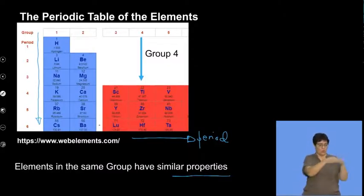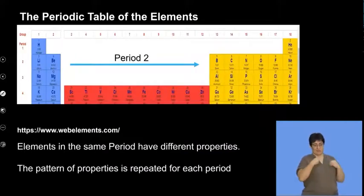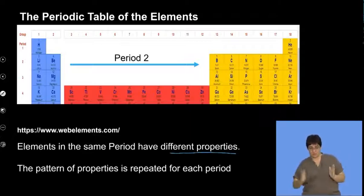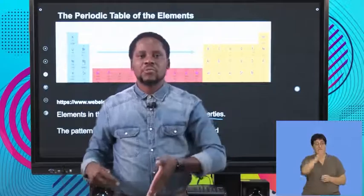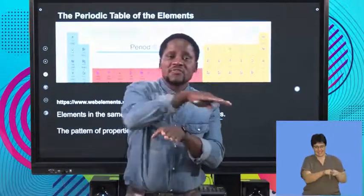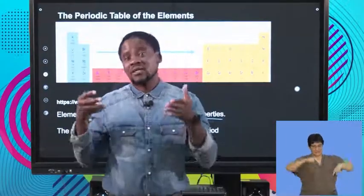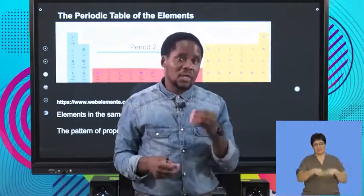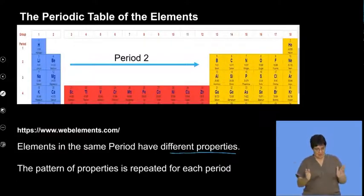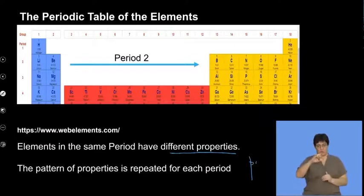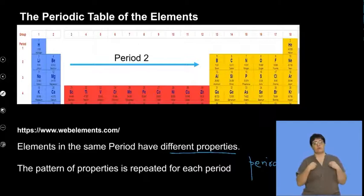Elements in the same period have different properties — this is very important. Elements in the same group exhibit similarity in terms of properties, but if we go across from left to right in the periods, the elements are in different groups, so their physical properties will definitely vary. The pattern of properties is repeated for each period, and this has to do with what we call periodicity — the repeat in terms of the properties of materials within a period, a trend repeated for every period.